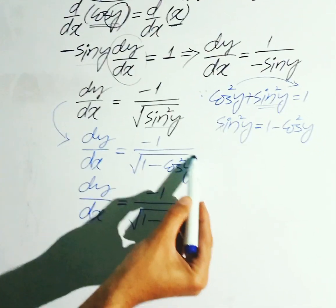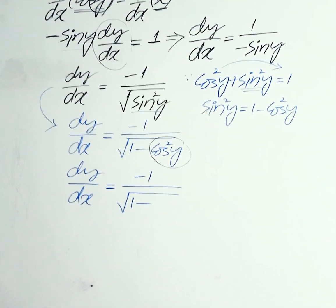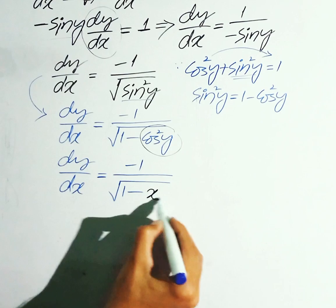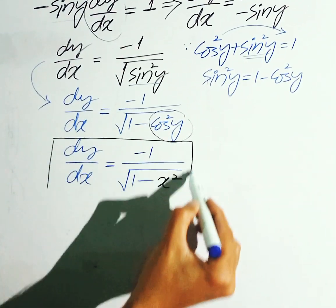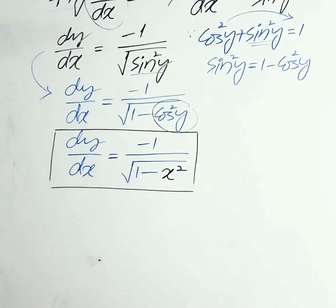Replace kerein haaam peh, cos square y ko x square peh. So yahan se baneka 1 minus x square. This is the derivative of basic cos inverse of x. Let's do this.